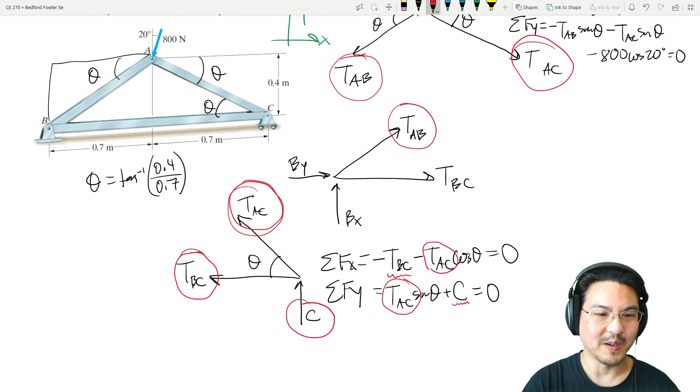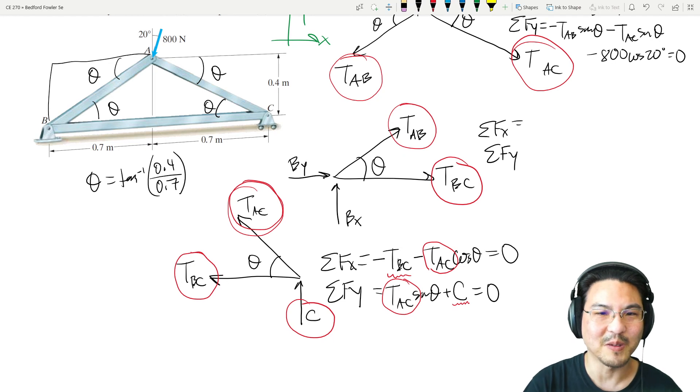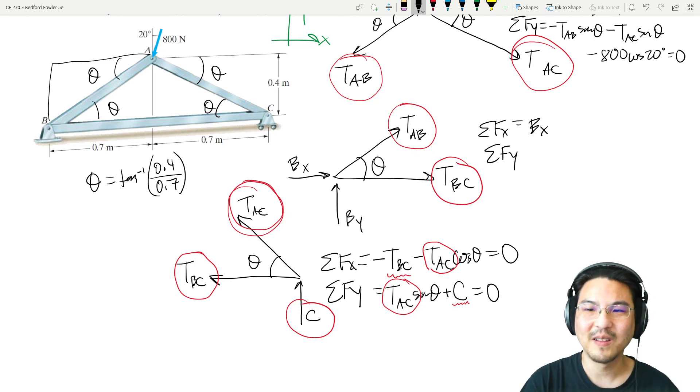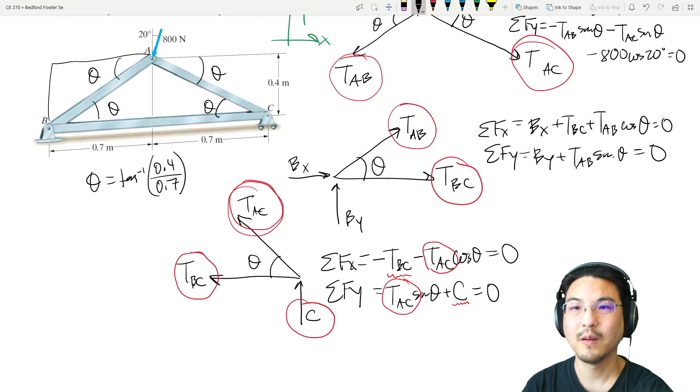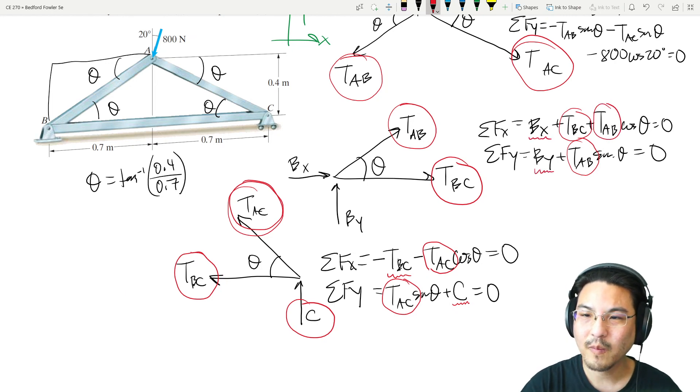This one right here is the same as this here, so now we go to joint B. Two equations to solve for these two remaining unknowns, and this angle is also theta. X direction: I wrote X and Y backwards, sorry, this is X, this is Y. X direction: BX plus TBC plus TAB cosine theta. Y direction: BY plus TAB sine theta.